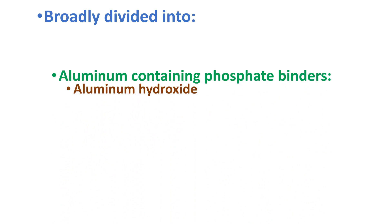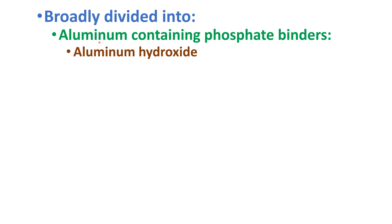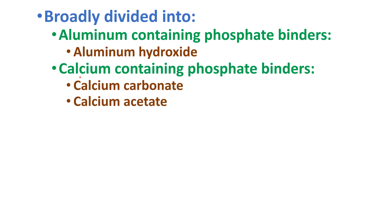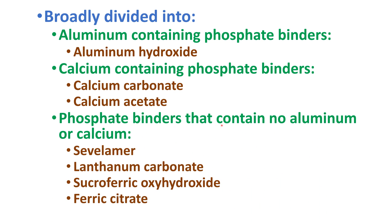Phosphate binders can be broadly divided into aluminum-containing phosphate binders, which include aluminum hydroxide; calcium-containing phosphate binders, which include calcium carbonate and calcium acetate; and phosphate binders that contain no aluminum or calcium, which include sevelamer, lanthanum carbonate, sucroferric oxyhydroxide, and ferric citrate.